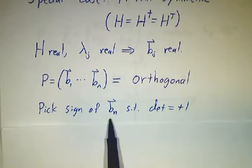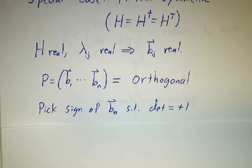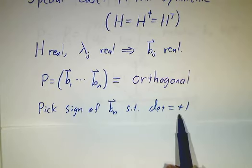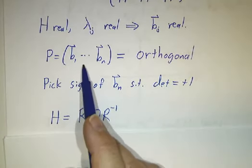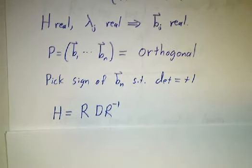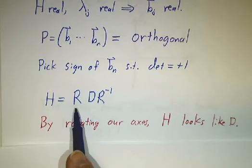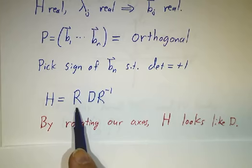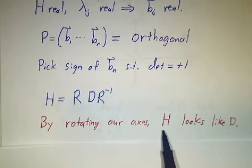And if we pick the sign - it's orthogonal, so the determinant is plus or minus 1, and by flipping the sign of the last column if necessary, we can make the determinant equal to plus 1. So this means that P is a rotation matrix, we can write H is RDR inverse. In other words, up to a rotation, the change of basis that takes us from our original basis to our new basis is just a rotation, so it's like tilting our heads. By rotating our coordinate axes, we can make the Hermitian matrix H look just like a diagonal matrix.